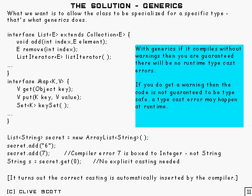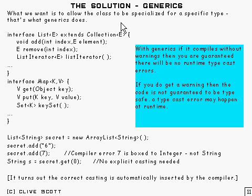The solution to this problem is a feature called generics, which was added to the language in version 5. What we usually want is a list of some particular type rather than a list of objects. In the non-generic version, we had to use object and cast everything to object, so it could handle any type we wanted to store. The way generics gets around this is it allows us to specify what's called a type parameter and use that as a type in the interface or class.